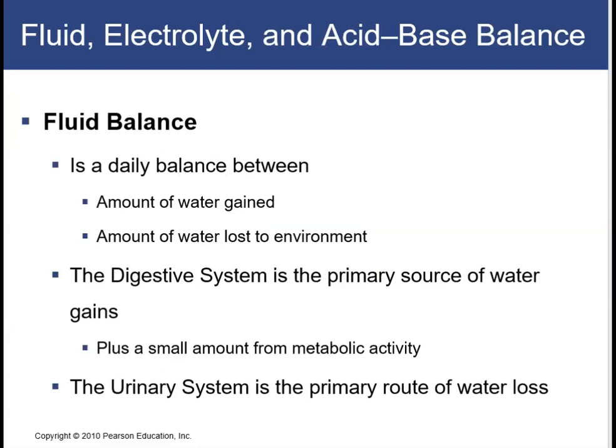We'll briefly talk about the different types of balance we're going to discuss in this chapter. First is fluid balance. There is a daily fluid balance, which involves a daily balance between the amount of water gained and the amount of water lost to the environment. The digestive system is the primary source of water gains, through the food we eat as well as things that we drink. We also gain a small amount of water from metabolic activities. The urinary system is the primary route for water loss from the body. We also lose water through feces, sweating, and breathing.